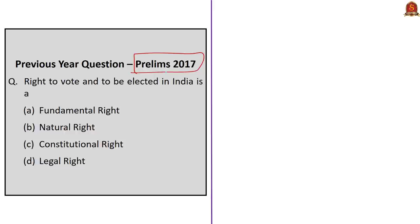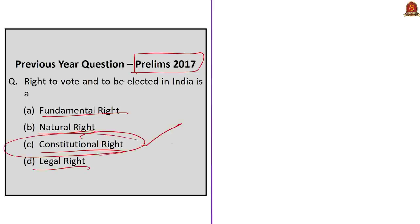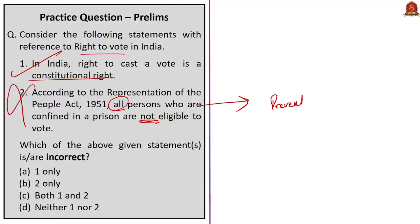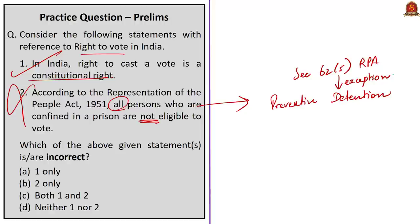A previous 2017 UPSC question asks: the right to vote and to be elected in India is — a fundamental right, natural right, constitutional right, or legal right. As discussed today, the correct answer is Option C — constitutional right, guaranteed by Article 326 of the Indian Constitution. The next question has two statements: Statement 1 — in India, the right to cast a vote is a constitutional right (this is correct); Statement 2 — according to the Representation of People's Act 1951, all persons confined in a prison are not eligible to vote (this is incorrect, because those subjected to preventive detention are an exception and can cast their vote through postal ballots). The question asks for the incorrect statement only, and the correct answer is Option B — 2 only.